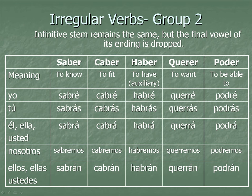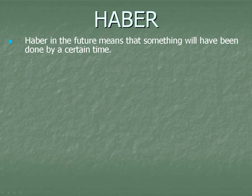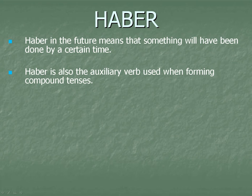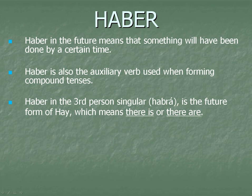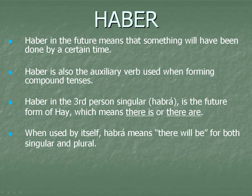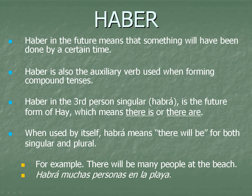Haber. Haber in the future means to say something that will have been done by a certain time. Haber is also an auxiliary verb used when forming compound tenses. Haber in the third person singular, habrá, is the future form of hay, which means there is or there are. When used by itself, habrá means 'there will be' for both singular and plural. Example: There will be many people at the beach — Habrá muchas personas en la playa.